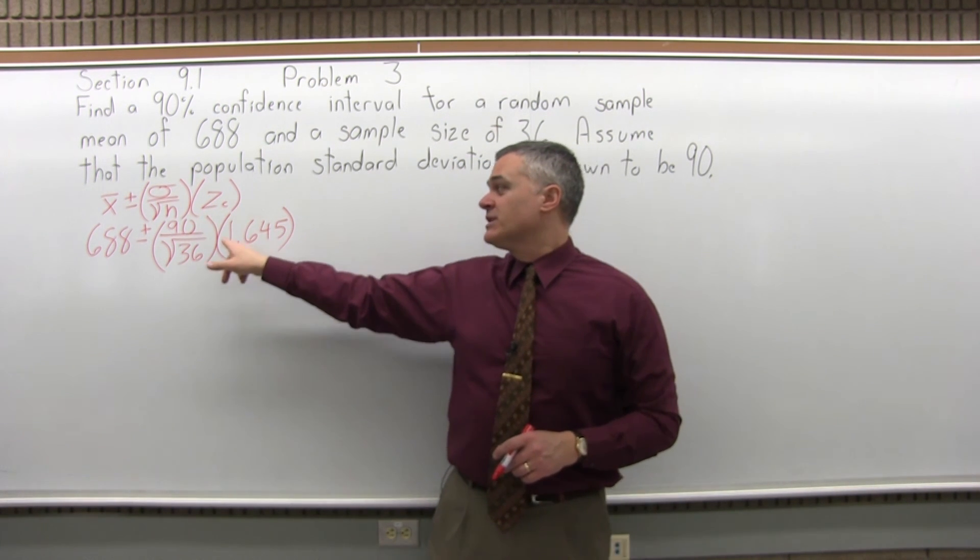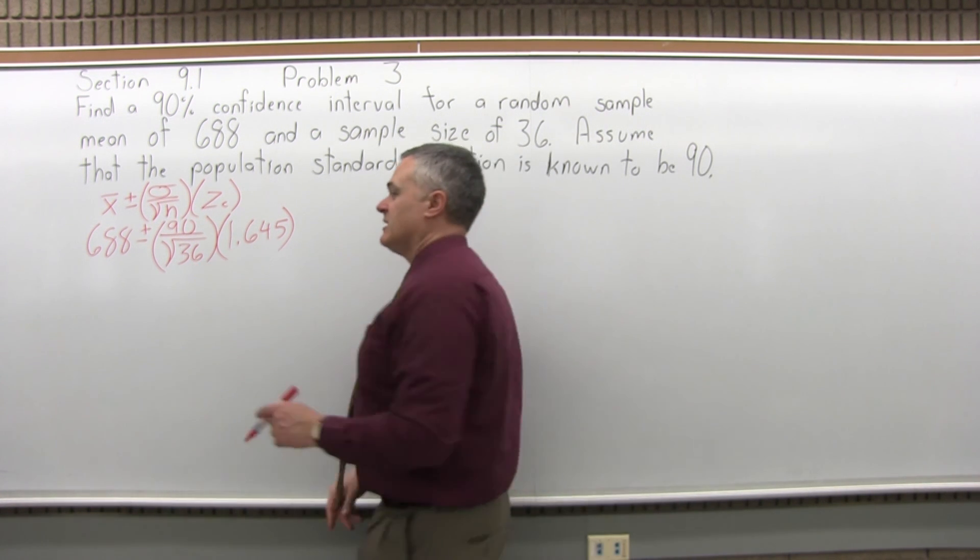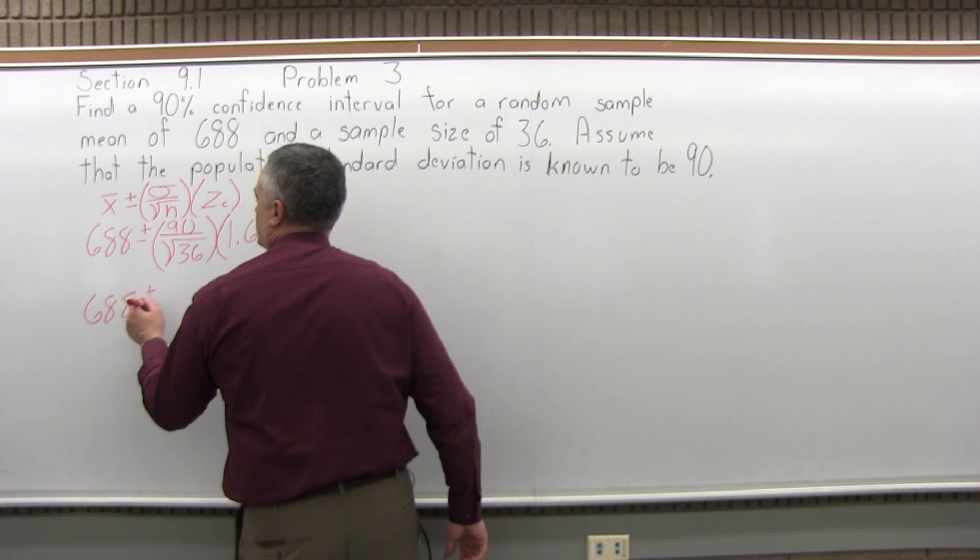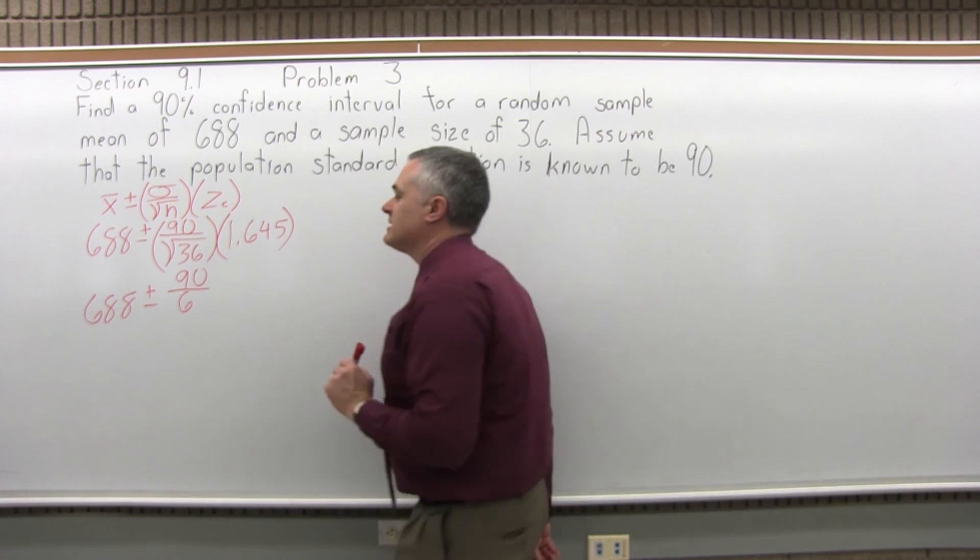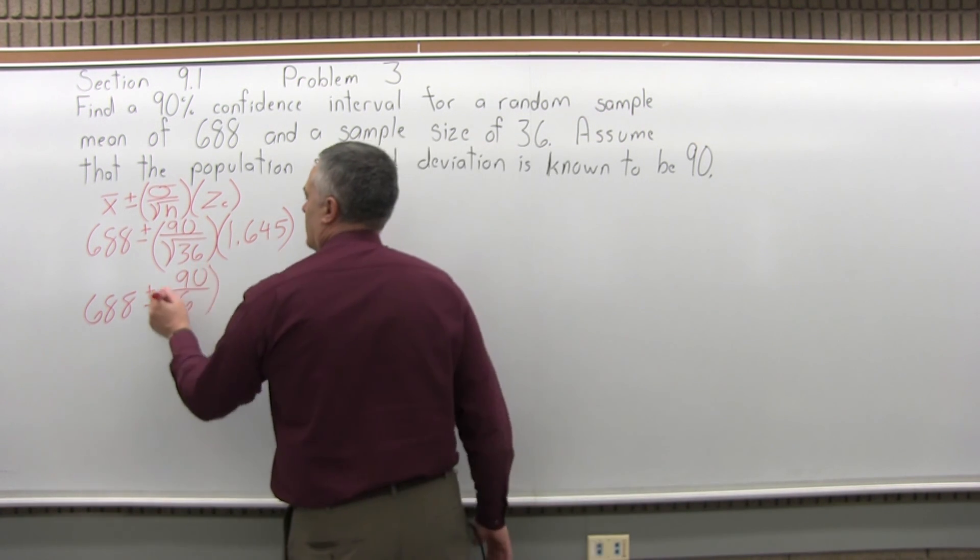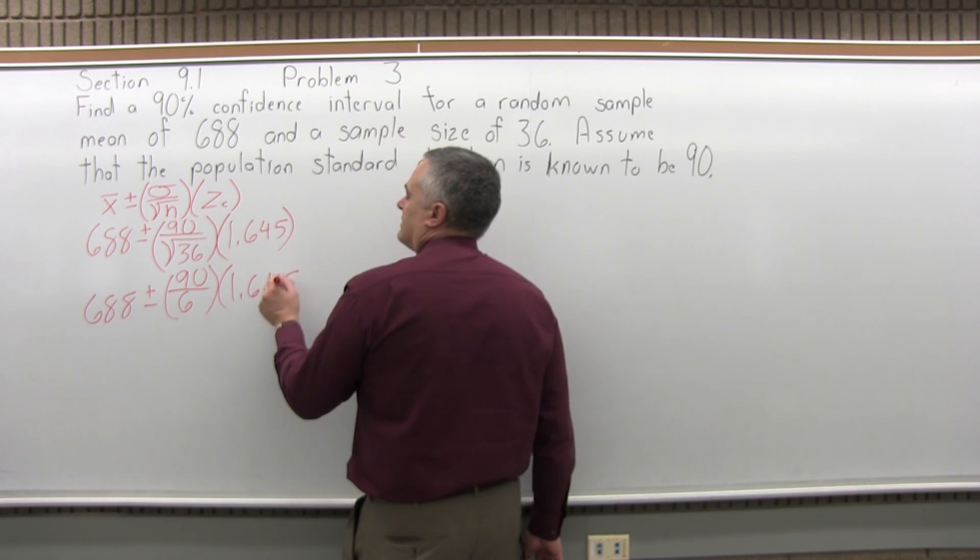Once you have it filled in, the first thing that you must deal with is the square root. That has to be dealt with before anything else. So I'll leave the 688 for a minute, plus or minus, the 90 in the numerator can stay. Square root of 36 is 6 because 6 times 6 is 36. And I will leave the 1.645 for a minute.